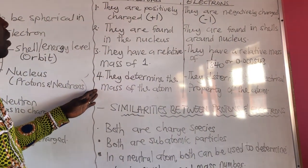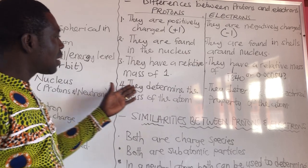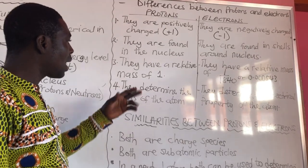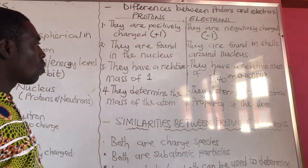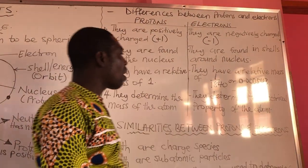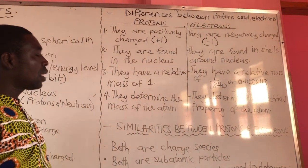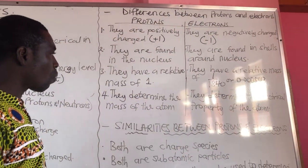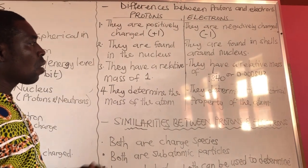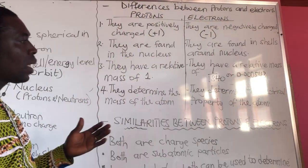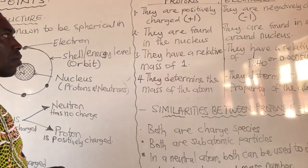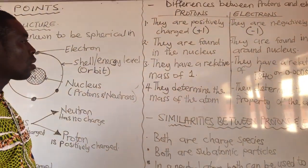And fourth, protons are used to determine the mass of the atom. When an atom is charged — whether positively or negatively — we have ions, which can also be a cation or an anion. So those are the key differences for you.